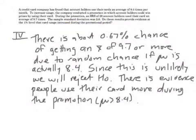Here's our last paragraph, exactly like what we wrote before. There's about a less than 1% chance of getting an x-bar of 9.7 or more due to random chance if mu is actually 8.4, exactly like what we were doing in chapter 11. Since this is unlikely, and here unlikely means less than 1%, not less than 5%, we will reject the null hypothesis. There is evidence at the 1% level that people use their card more during the promotion. What I'm trying to do here is in the last sentence, try to write it in English, not symbolically. Think about if you were writing a big paper, this last sentence is your conclusion of what the experiment was all about.